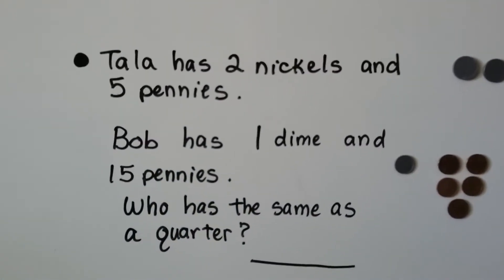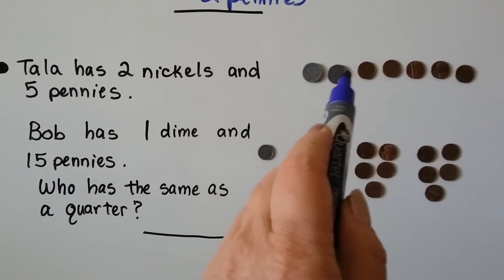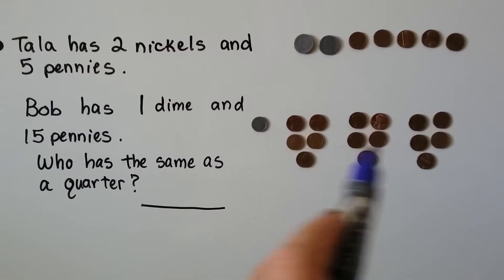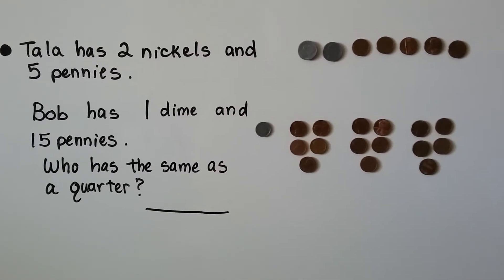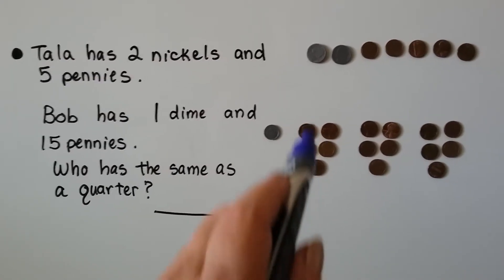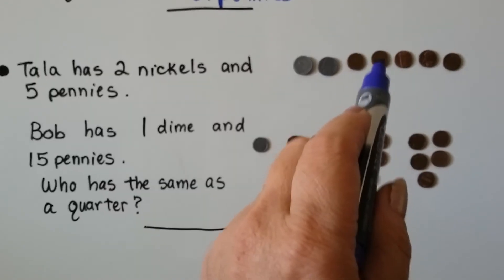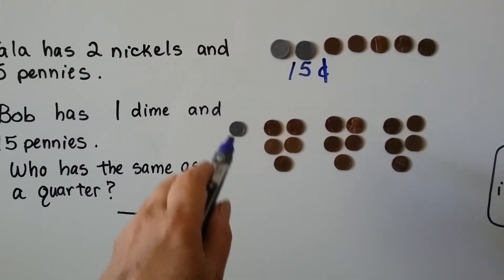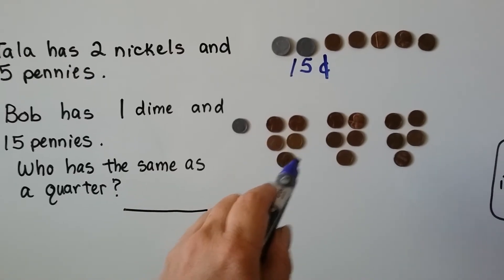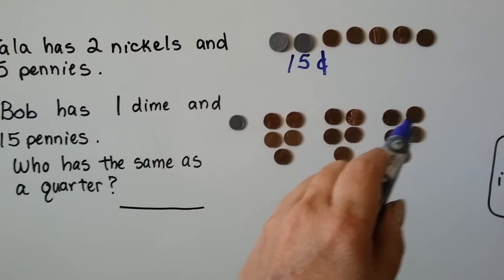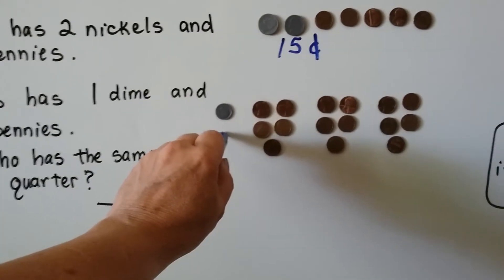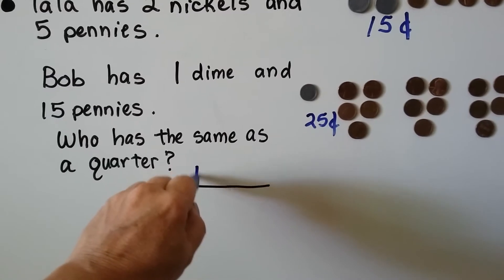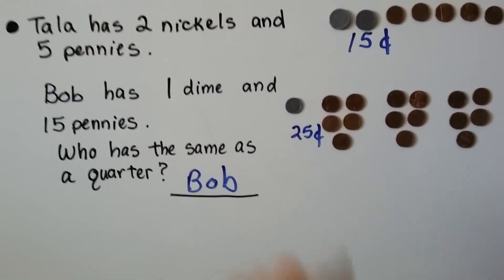Let's look at this one. Tala has two nickels and five pennies. Bob has one dime and 15 pennies. So who has the same as a quarter? Well, two nickels is 10, then 11, 12, 13, 14, 15 — she's got 15 cents. And he's got 10, then 11 through 25 — so he's got 25 cents. So who has the same as a quarter? Bob does, right? Because he's got 25 cents.